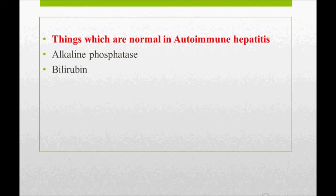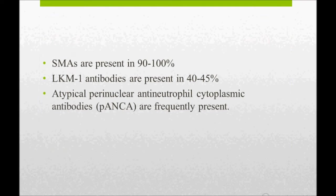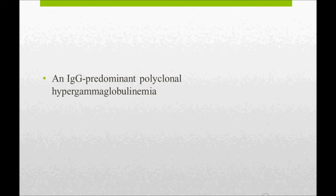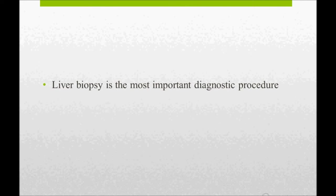Smooth muscle antibodies (SMA) are present in 90 to 100 percent of patients, so most patients will have this. LKM-1 antibodies are present in 40 to 45 percent of patients. pANCA are frequently present, and there is an IgG-predominant polyclonal hyperglobulinemia. Liver biopsy is the most important diagnostic procedure — if asked which is the most accurate test to diagnose autoimmune hepatitis, the answer is liver biopsy.